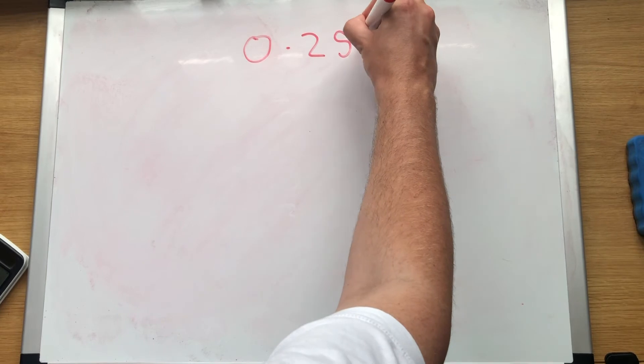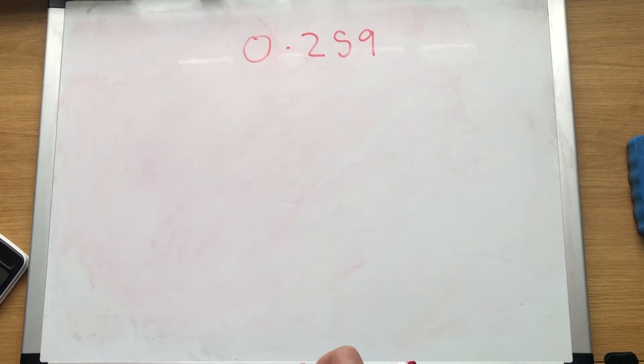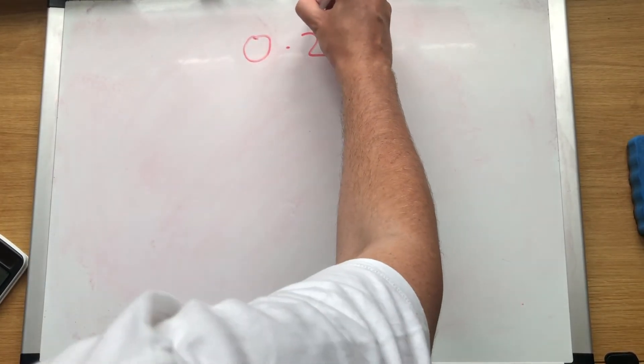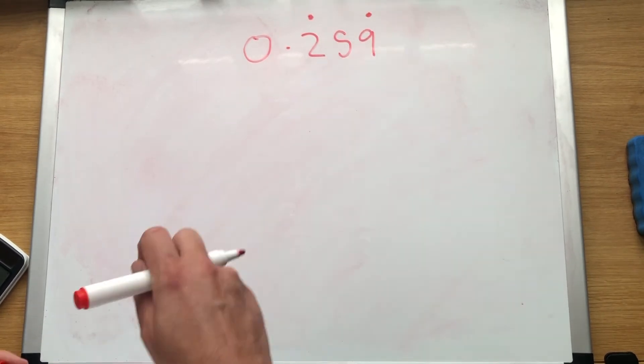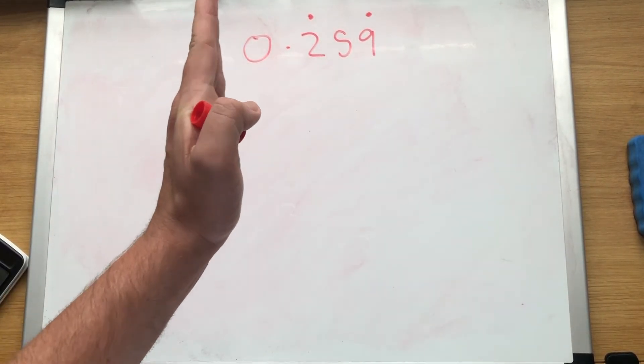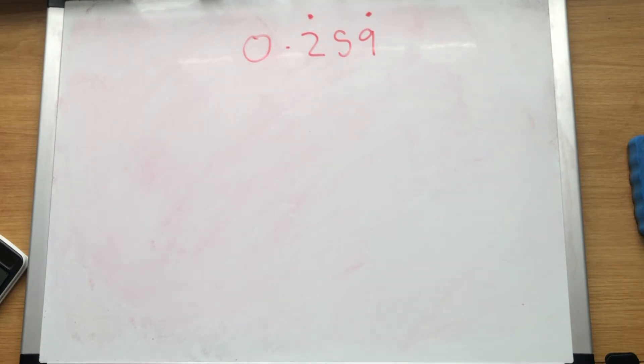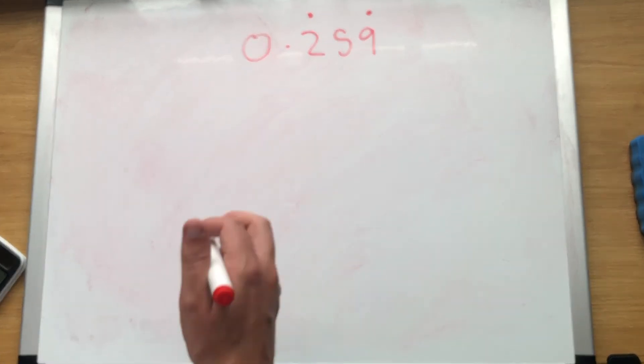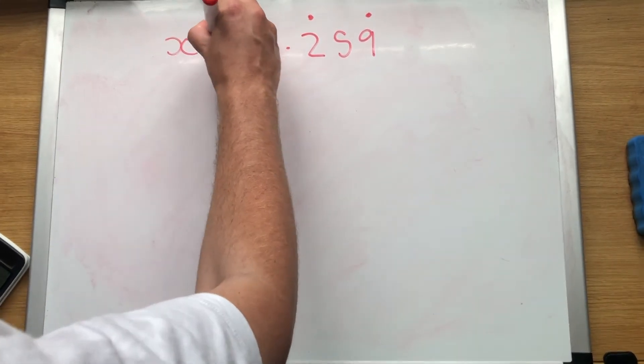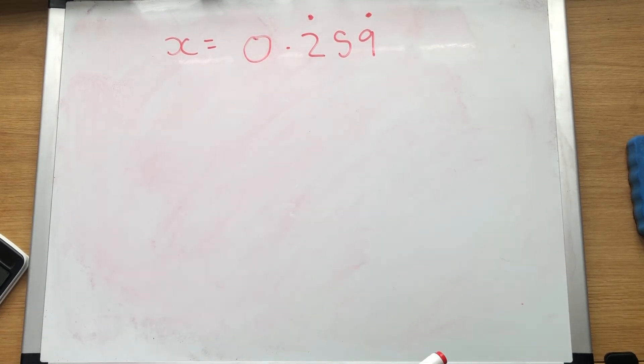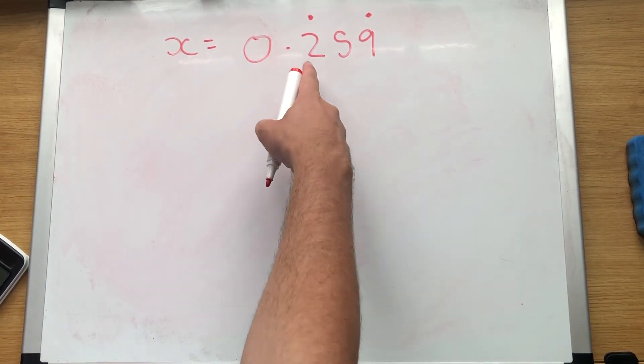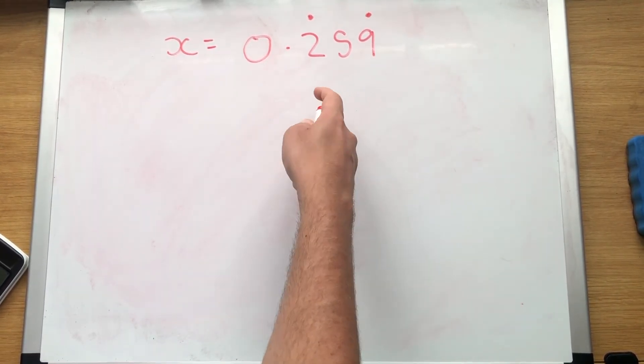0.259 recurring. So that's 0.259, 259, 259, 259. Our first step, always, x equals. Our next step, does everything after the decimal place recur? 259, yeah.